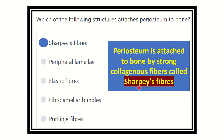So our final answer is Sharpey's fiber — this fiber attaches the periosteum to the bone. Thank you.